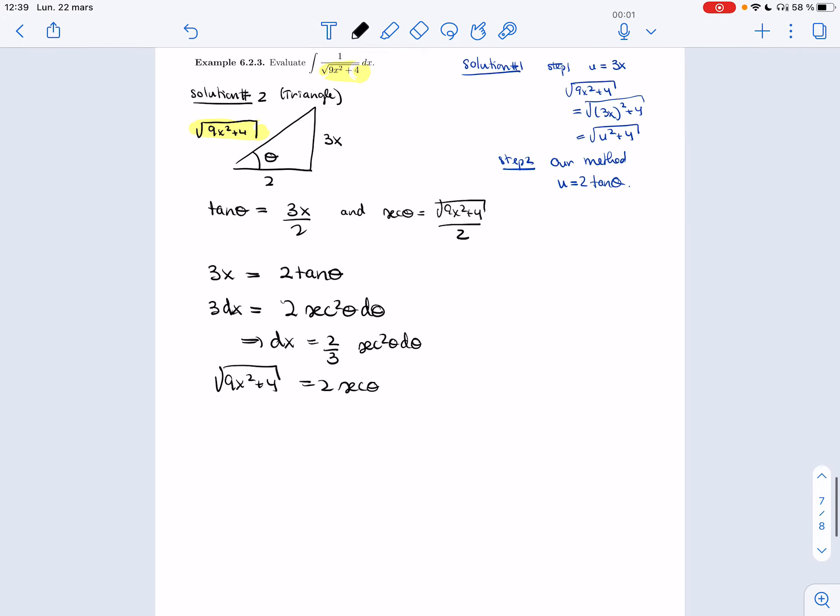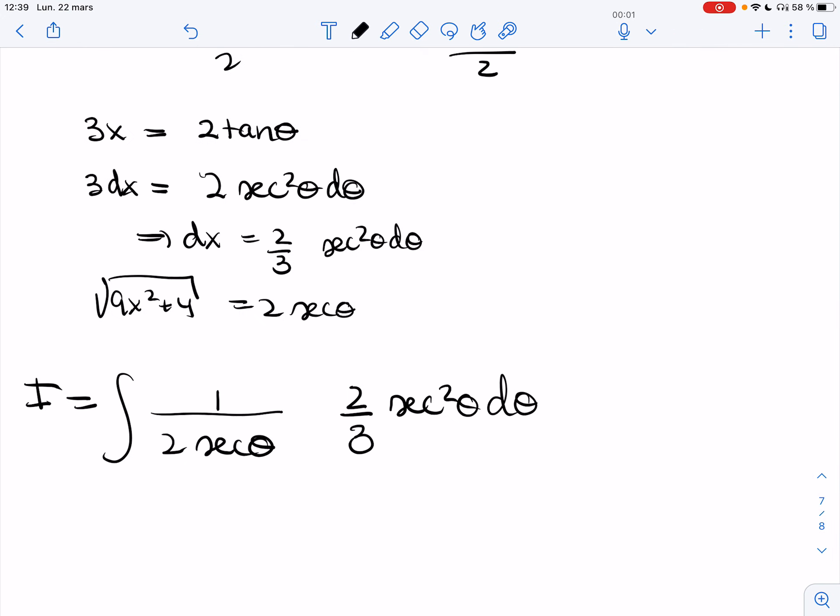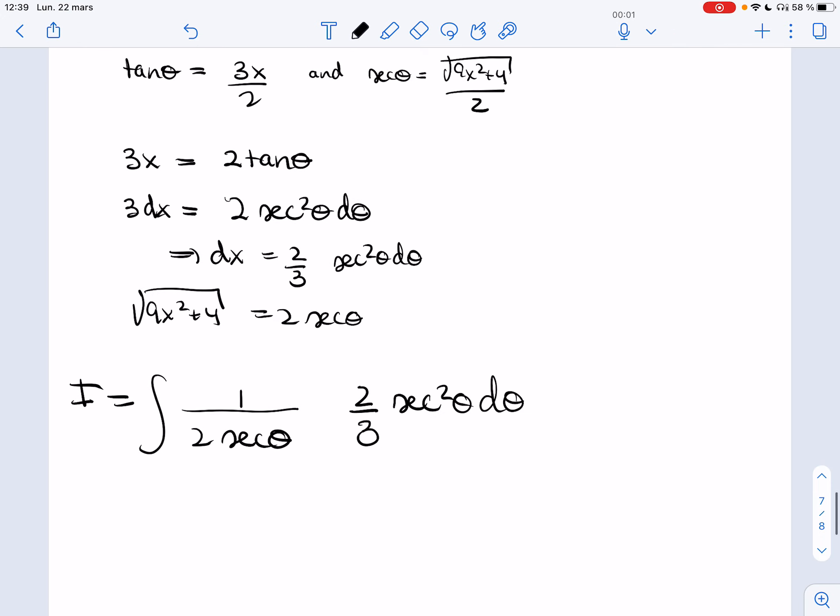All right, so using all of this, the integral of the top was 1 stays 1. The denominator is the square root. So that's 2 secant theta. And then the dx here, I'm going to replace by 2 thirds secant square theta d theta. That's a 3. Yes.